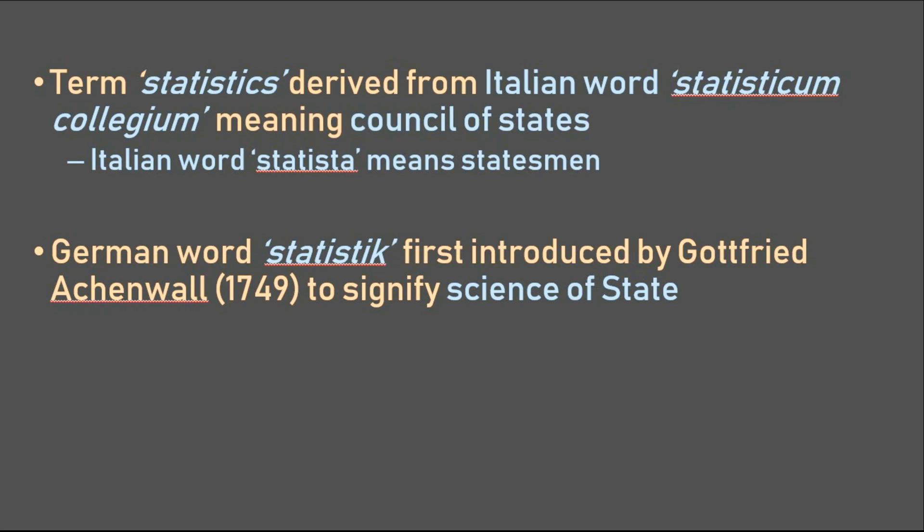Statistics, therefore, can be regarded as the science of state. Statistics is not a field of mathematics, but an autonomous mathematical science like computer science or operations research. Statistics, unlike mathematics, had its origin in public administration. It was also used in demography and economics.